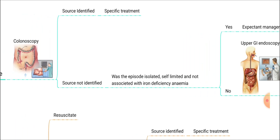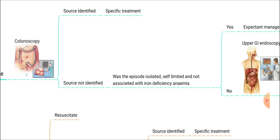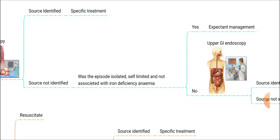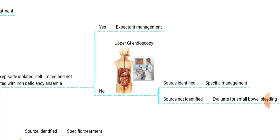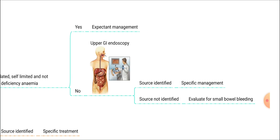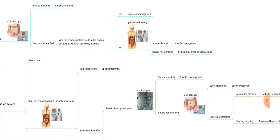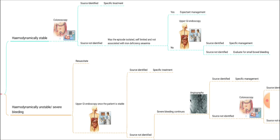If the colonoscopy did not reveal any source, but the patient has continuous bleeding — not self-limited, not isolated — and the patient may also have iron deficiency anemia, we can do an upper GI endoscopy. If the source is identified on upper GI endoscopy, we can do specific management. If the source is not identified on upper GI endoscopy, we evaluate for small bowel bleeding, since colonoscopy and upper GI endoscopy have both not identified any source and the pathology may be in the small bowel. This is the management of patients presenting in a hemodynamically stable state.